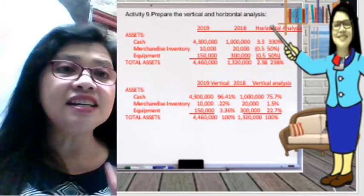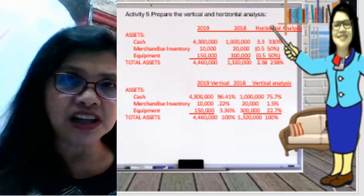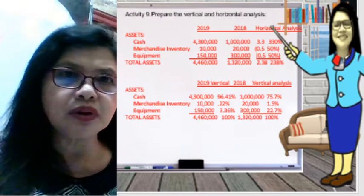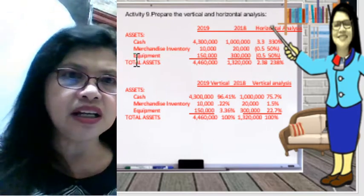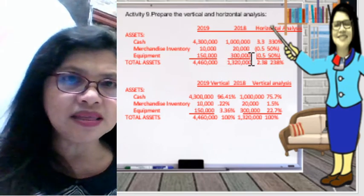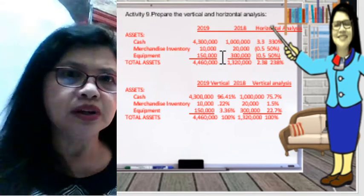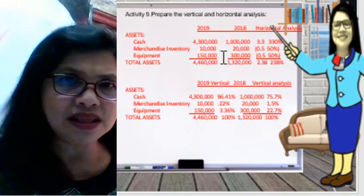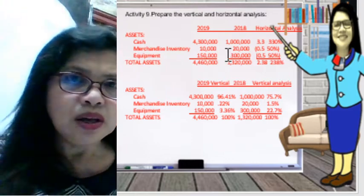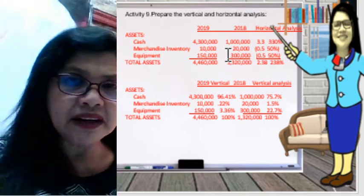That gives a 330% increase. Same thing with the merchandise inventory. The 2018 value is 20,000 and 2019 is 10,000. So 10,000 minus 20,000 divided by 20,000 gives a decrease — a negative 50%.